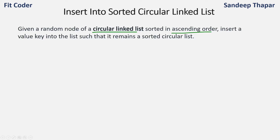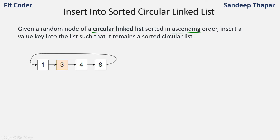Let's take an example. We are given this linked list which has 4 nodes: 1, 3, 4, and 8. After 8 we again go back to node 1, so next of 8 is 1. There is a circle here, that is why it is known as a circular linked list. It is sorted in ascending order, so the node values 1, 3, 4, and 8 are sorted.